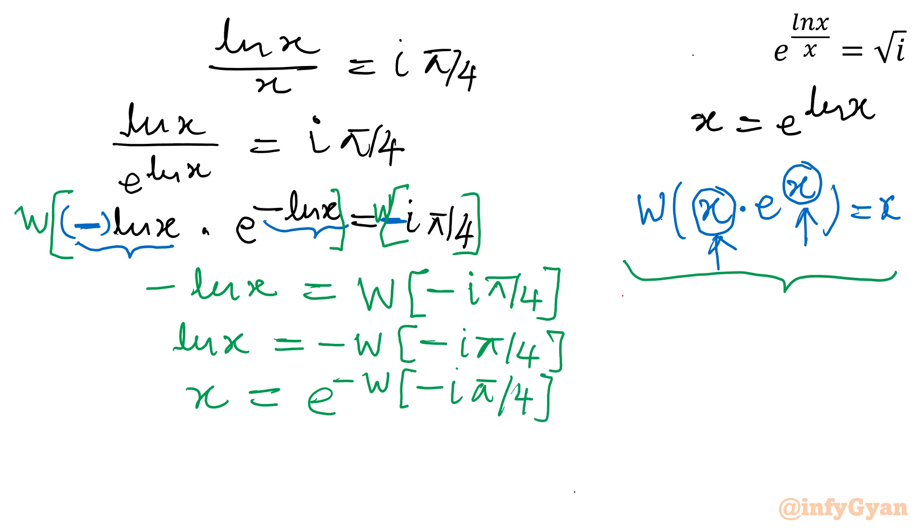Once I will solve our RHS I will be having x is equal to 0.65 plus i times 0.36. This is how I can find out our x value. See it is in Cartesian form a plus ib form.